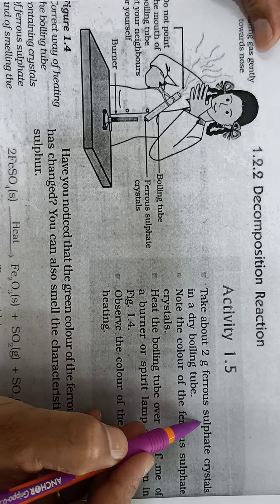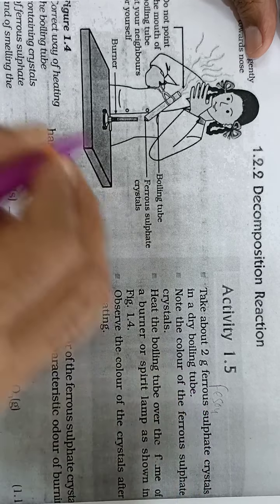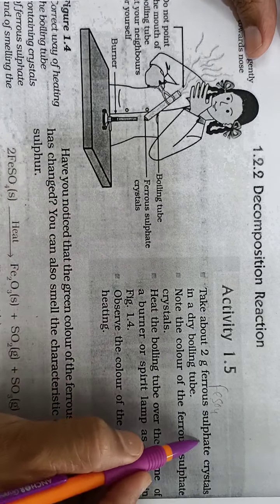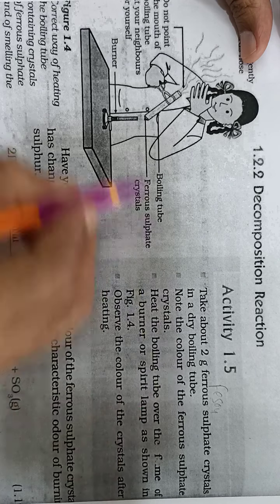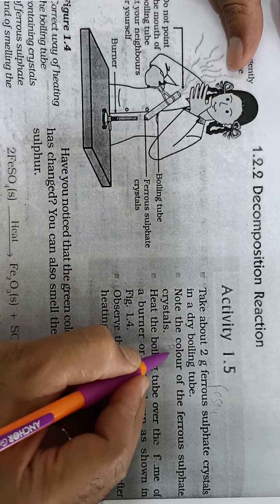We will take 2 gram ferrous sulphate, that is FeSO4, 2 gram ferrous sulphate crystals in a dry boiling tube. What is the color of ferrous sulphate? It is pale green.